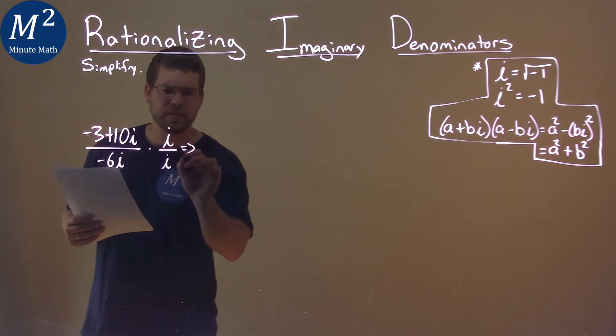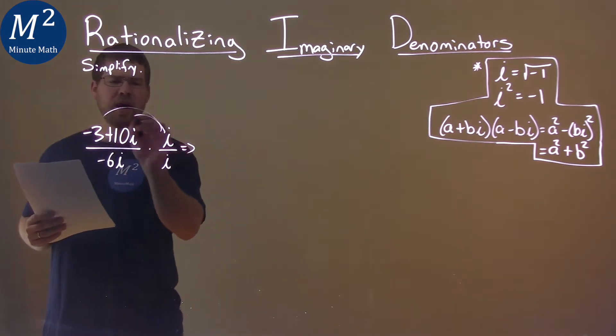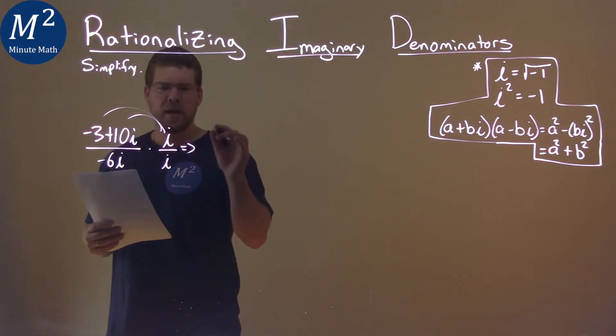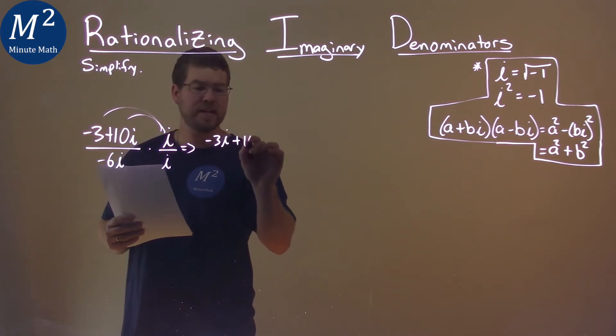And what does that do? Well, I distribute the i to both parts of the numerator, and we have negative 3i plus 10i squared.